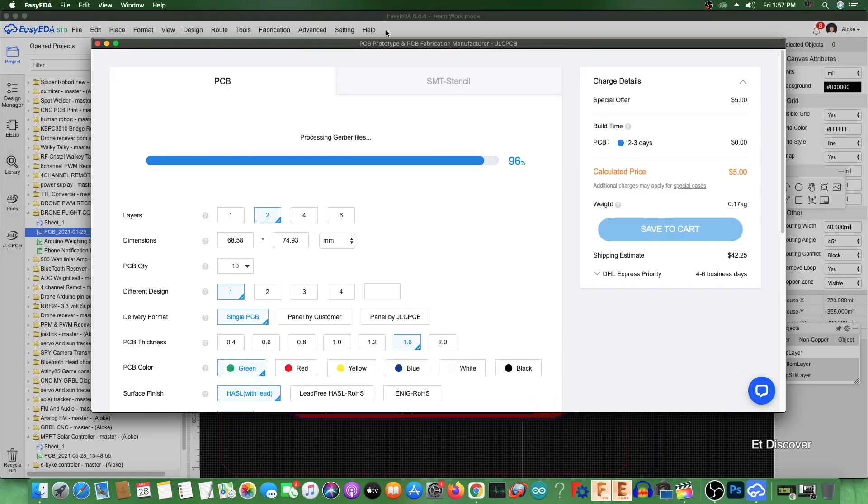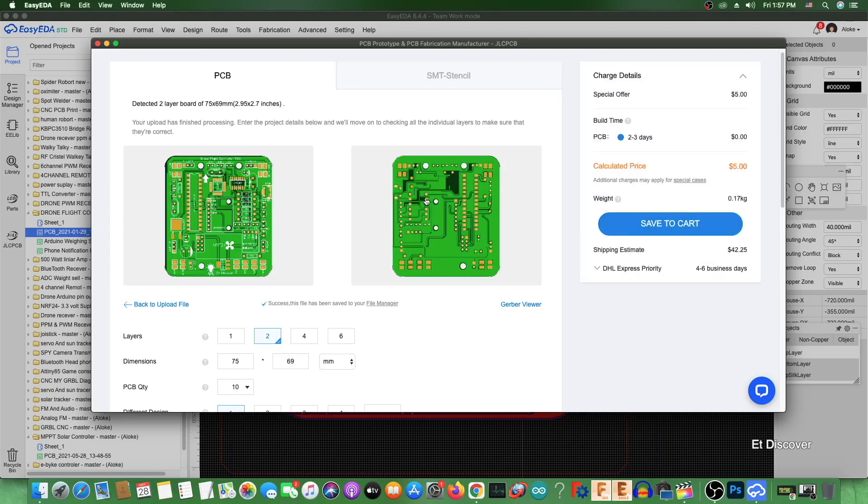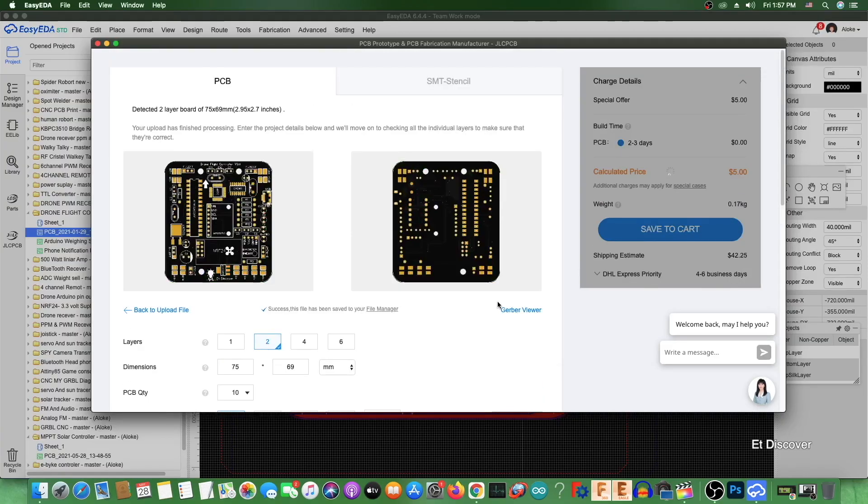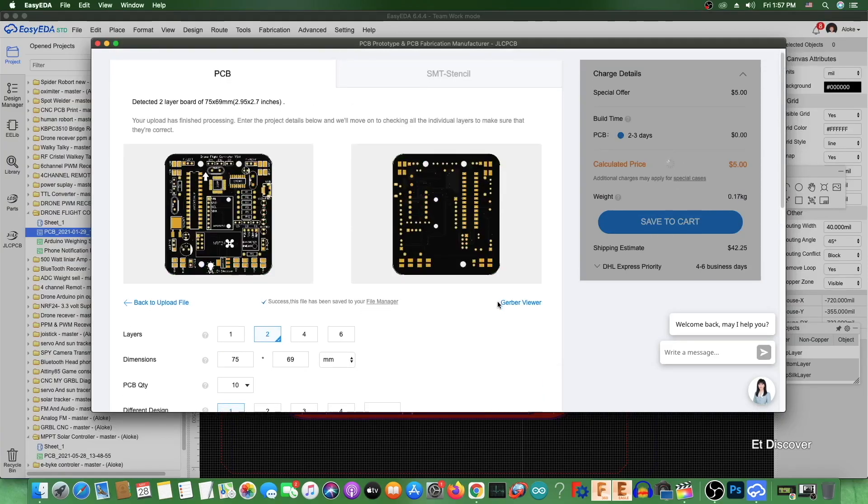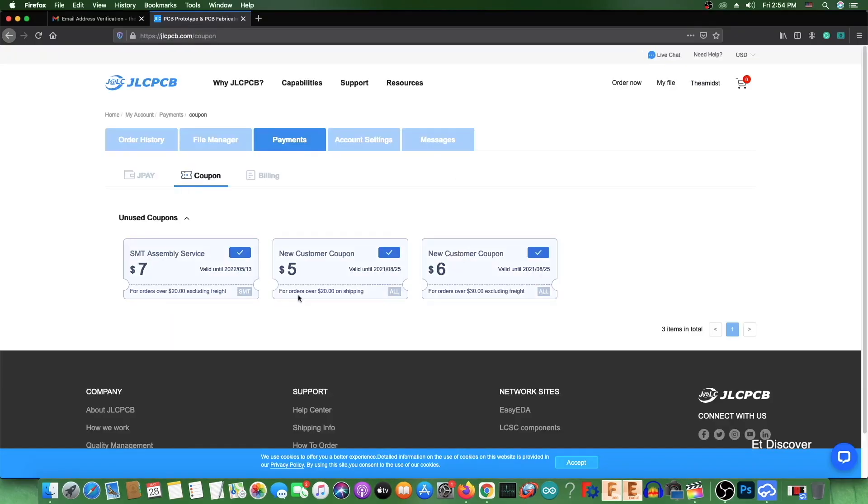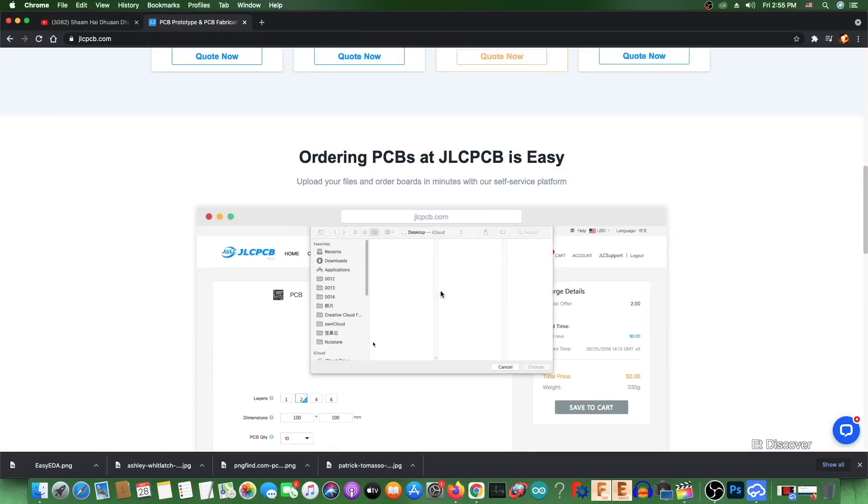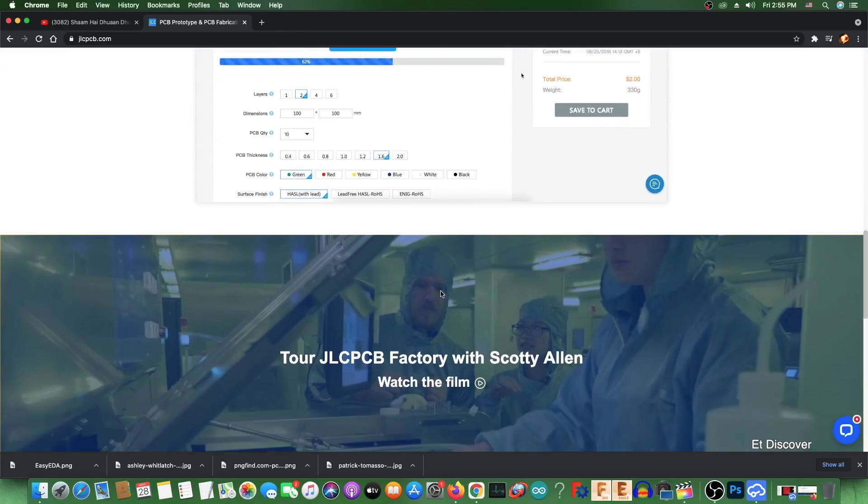JLCPCB has come up with an excellent offer for you. First time any user registers on the JLCPCB website, you will get a free coupon of $18. This is really awesome right. On the other hand, you will also receive a free coupon every month on SMT orders. So without wasting any more time, grab this wonderful offer by visiting the JLCPCB website. Link is in the description box.